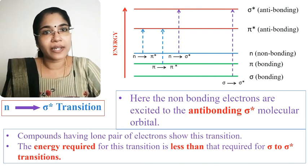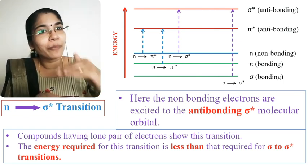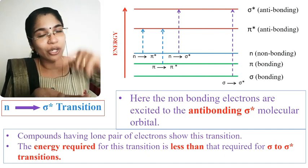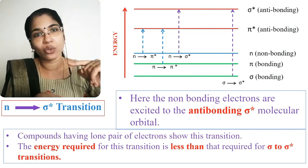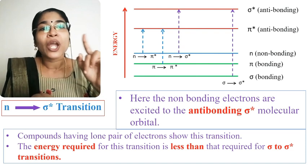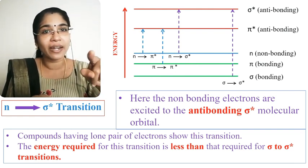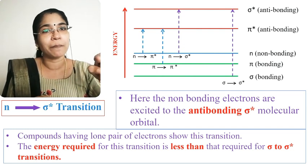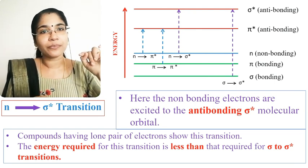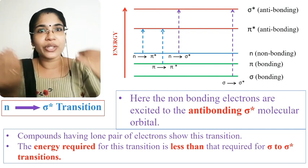The second transition is N to sigma star. Here, non-bonding electrons are excited to the sigma star anti-bonding orbital. Compounds that have non-bonding electrons show this type of transition. The energy required for N to sigma star transitions is less compared to sigma to sigma star transitions.